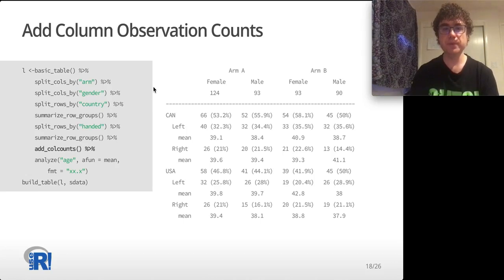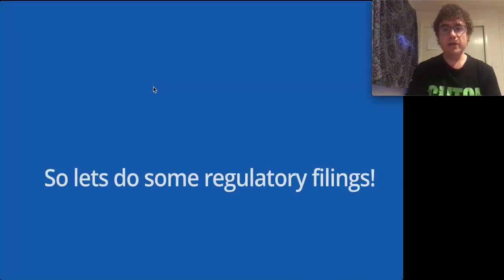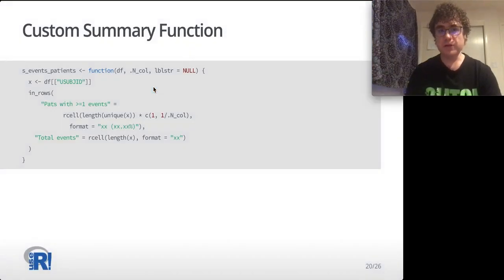I told you this was motivated by regulatory filings, so let's look at some regulatory filing tables. These are obviously not real data as I said in the beginning of the talk. First off we're going to have a summary, a custom summary function. I don't want to spend too much time on this but we can see here that we've got this in_rows function there. And in_rows is basically an illustration that a summary can have more than one row in it. An analysis can also in fact have more than one row in it using the same in_rows function. So this summary is actually going to have two rows for each grouping: patients with at least one event and total number of events. The summary function accepts the full data frame that represents the subset and then it grabs the relevant ID column and does some things to it.